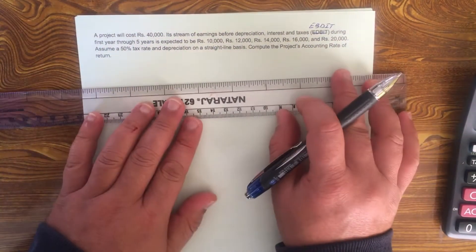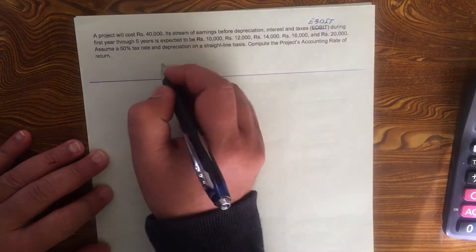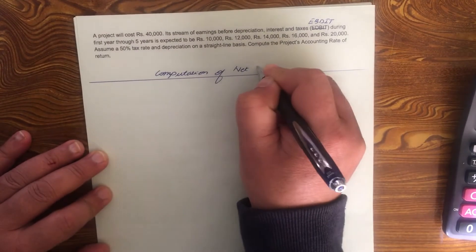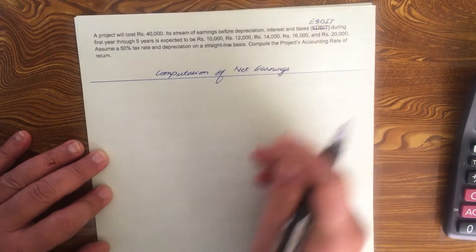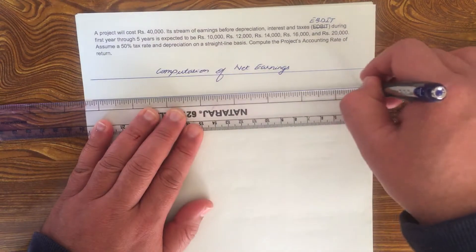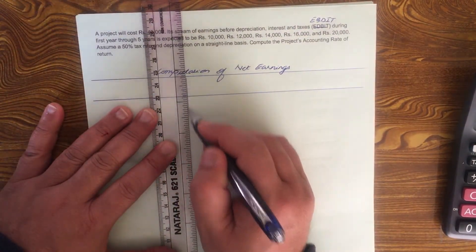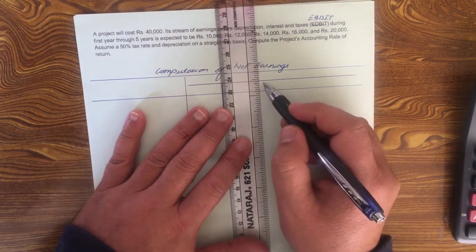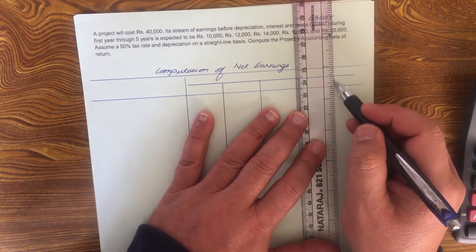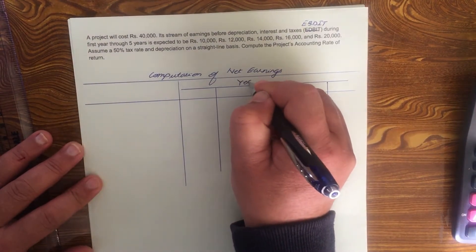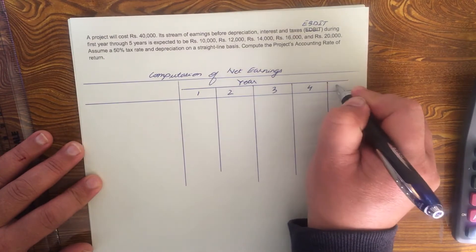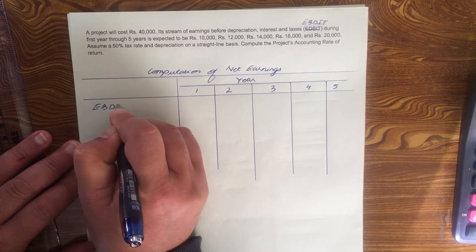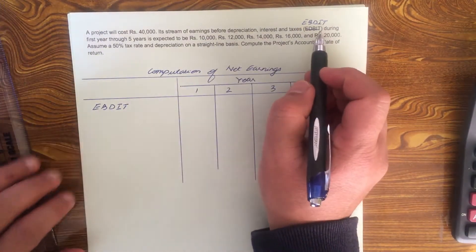We have to find out the ARR. First thing, for finding out the solution, is computation of net earnings. This is year 1, 2, 3, 4 and 5. Your earnings before depreciation, interest and taxes, EBDIT. Now there is no interest here, so ignore that. So EBDT or EBDIT.